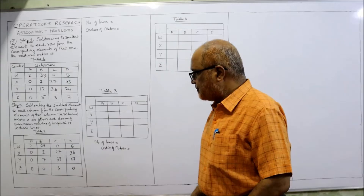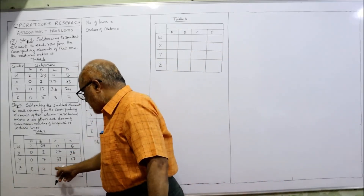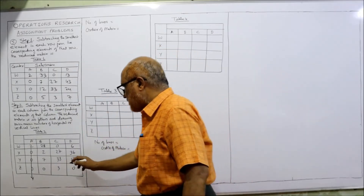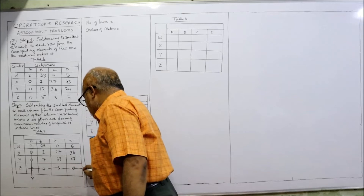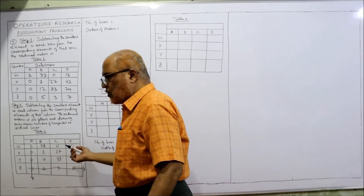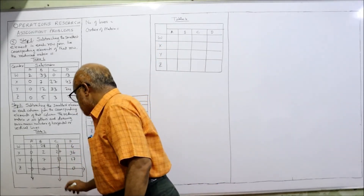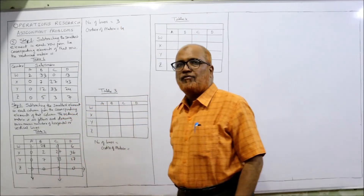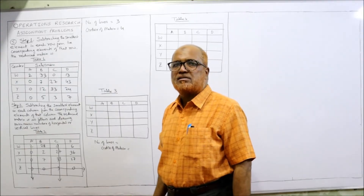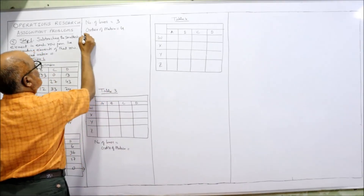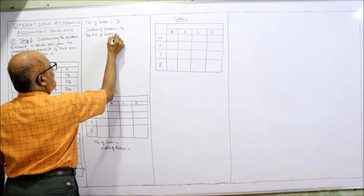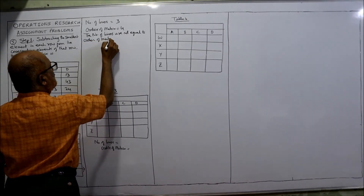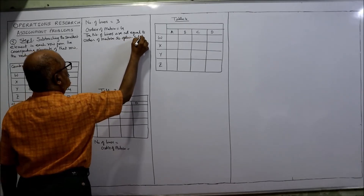Now drawing the minimum number of lines to cover all zeros. Three zeros can be covered in a single line. Then 2 zeros in the last row are covered. Only 1 zero is left, covered vertically. Total of 3 lines cover all zeros. Number of lines is 3, but order of the matrix is 4 by 4. When the number of lines is not equal to the order of the matrix, the solution is not optimal.